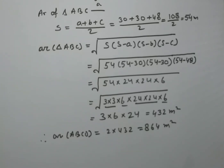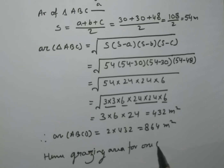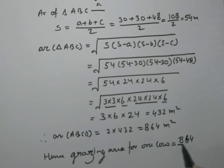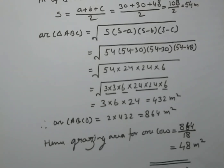Now children, keep in mind that this is for 18 cows. So grazing area for one cow = 864 ÷ 18 = 48 meter square. So children, you can understand that this is our final answer — the grazing area for one cow is 48 meter square. This is how you can solve this question. Thank you.